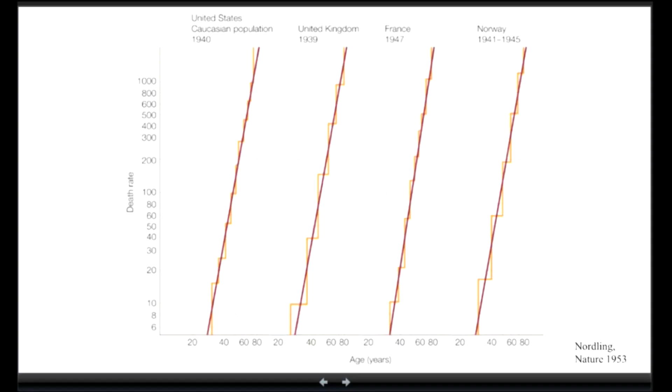If there were two mutations that caused the cancer, then you can follow, and it's going to be linear with age. So he looked at the slope, and he saw that the slope was around seven, six, seven. So he conjectured that you need at least six or seven mutations in a particular cancer to happen.